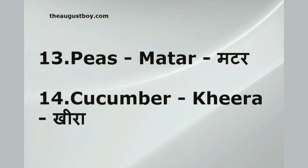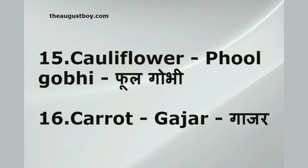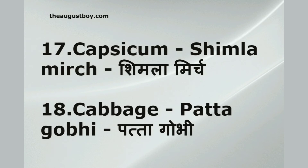Cucumber — kheera. Cauliflower — phool gobi. Carrot — gajar. Capsicum — shimla mirch. Cabbage — patta gobi.